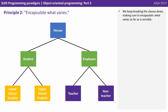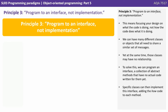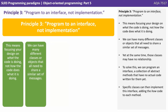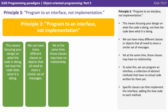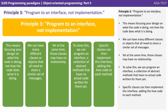We keep breaking the classes down, making sure to encapsulate what varies as far as is sensible. The final principle is programme to an interface, not implementation. This means focusing your design on what the code is doing, not how the code does it. We can have many different classes or objects that all need to share a similar set of messages, yet those classes may have no relationship whatsoever. To solve this, we can programme an interface — a collection of abstract methods that have no actual code written for them. Specific classes can then implement this interface, adding the implementation code to each method.